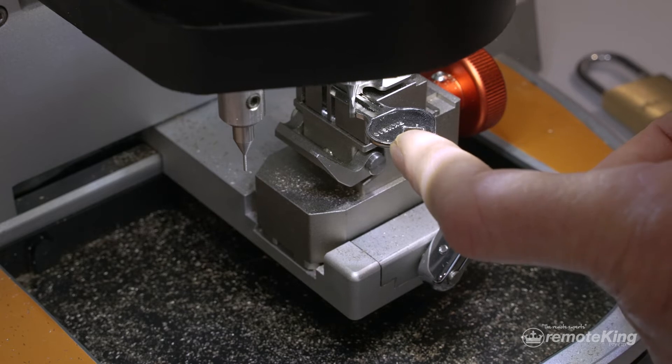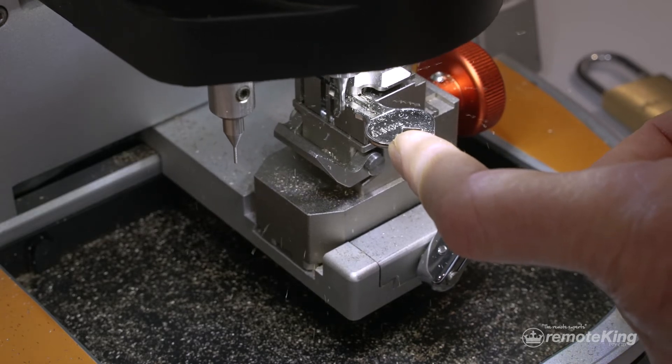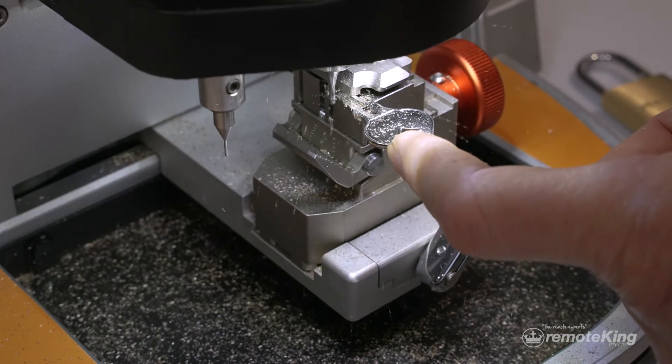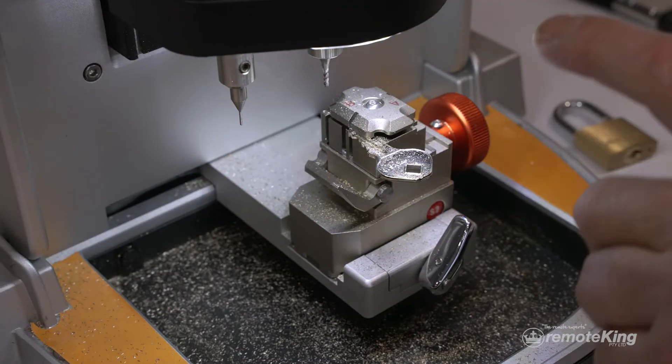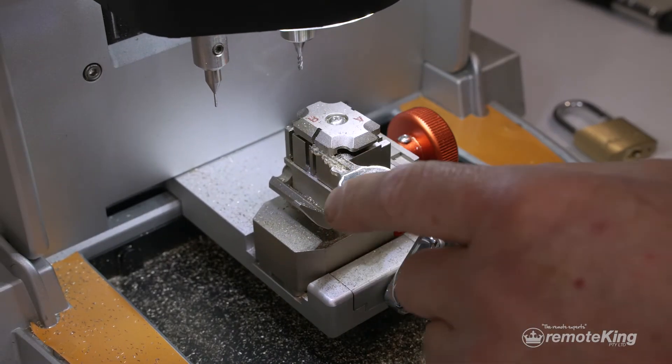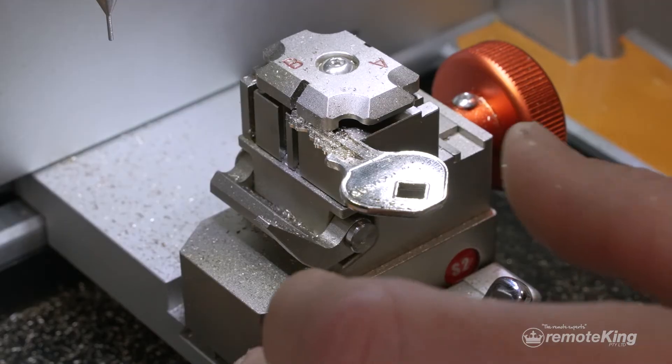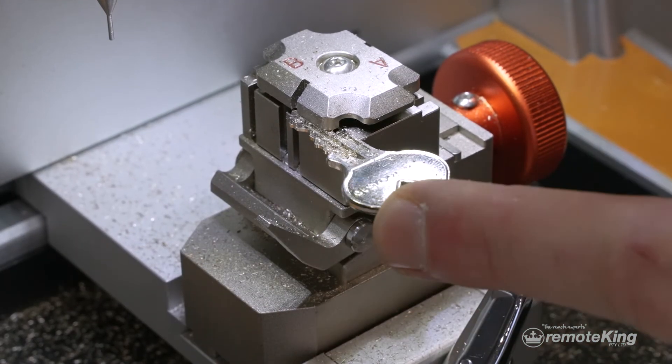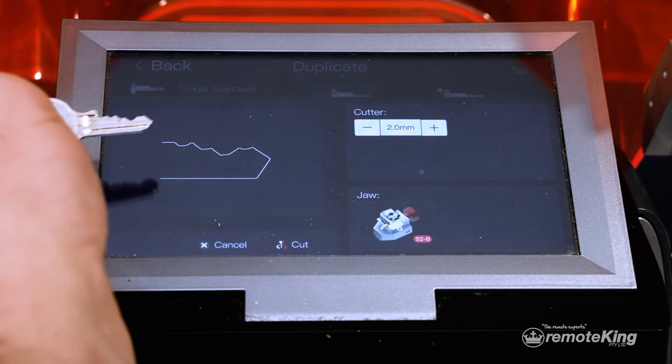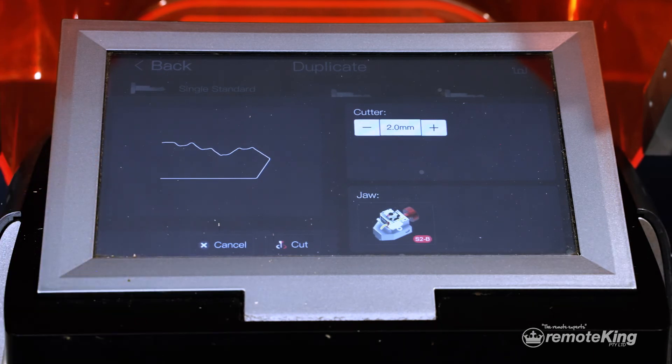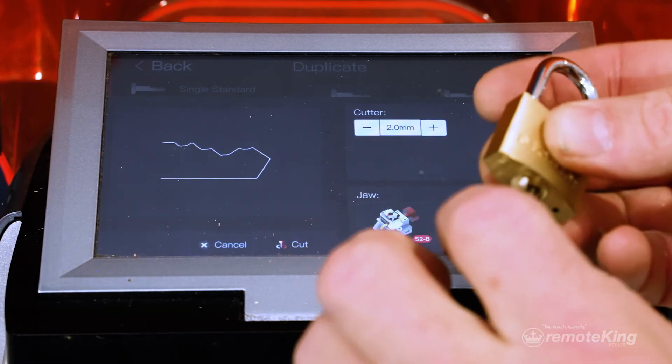What would happen if we didn't hold that little bit of pressure on some of these smaller keys is the key would start to flick out and we'd get an inaccurate cut. So just holding there gives us a more accurate cut. And there we have a perfectly cut key. We'll just check that to make sure it's working. Perfect.